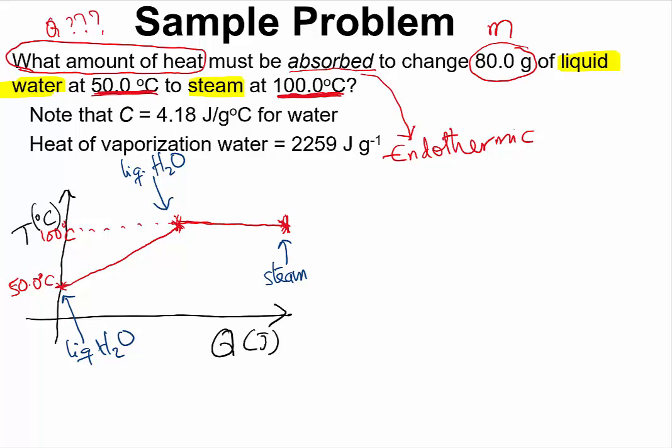So all we want to do is to calculate the energy required for changing the temperature of liquid water at 50.0 degrees Celsius to liquid water at 100 degrees Celsius. Temperature is changing. So we are going to make use of Q equals MC delta T.